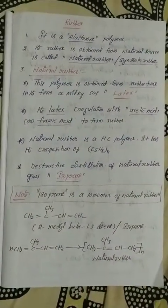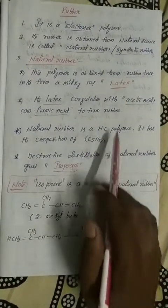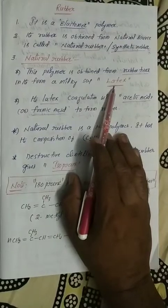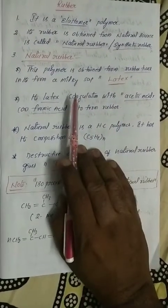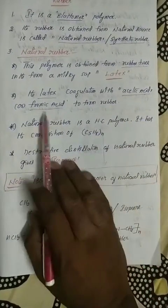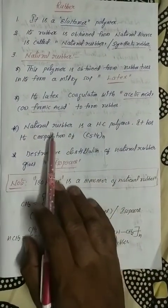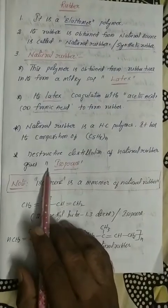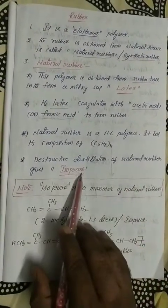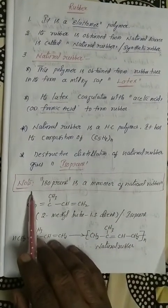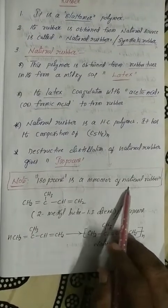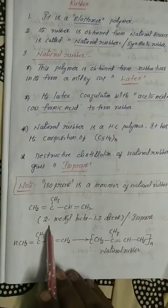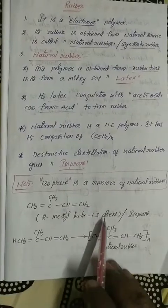For competitive entrance exams at NEET level, the important points are: the rubber tree gives a milky sap called latex; latex is coagulated with acetic acid or formic acid; natural rubber has hydrocarbon composition C5H8; destructive distillation of natural rubber gives isoprene; isoprene is the monomer unit of natural rubber; and the IUPAC name of isoprene is 2-methyl-buta-1,3-diene.